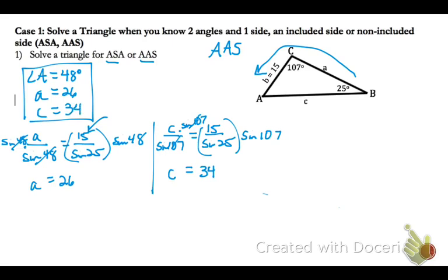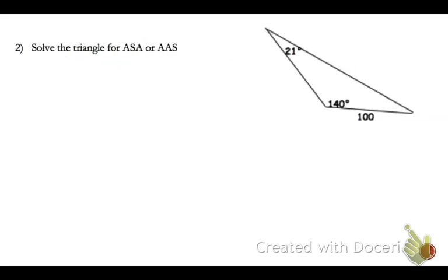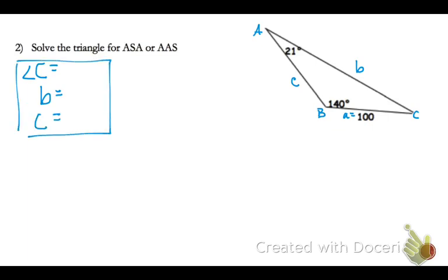Now let's look at example 2 and put labels on our triangle. Label the top angle A, the next one B, and the last one C. With non-right triangles, it doesn't matter which angle is assigned which letter. Side A is 100 because it's across from angle A; we don't know sides B and C. We need to find angle C, side B, and side C. Taking 180 and subtracting the other two angles — 140 and 21 — angle C is 19 degrees.